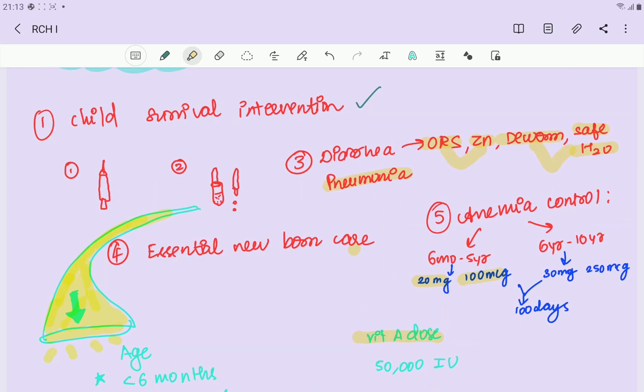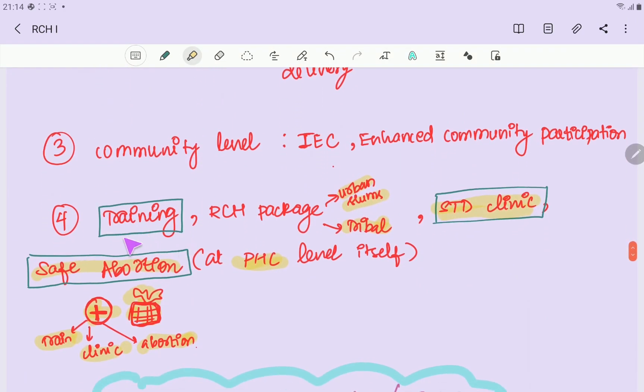Next, essential newborn care is to reduce perinatal, neonatal mortality. The two issues are training and referral services. At PHC level, we have to identify very serious conditions then refer. If you have serious conditions, refer to first referral unit or district hospital. Referral services and training are essential newborn care to reduce perinatal and neonatal mortality. This training is given at all different levels and is directly linked to NACCO, which is National Rights Control Organization.